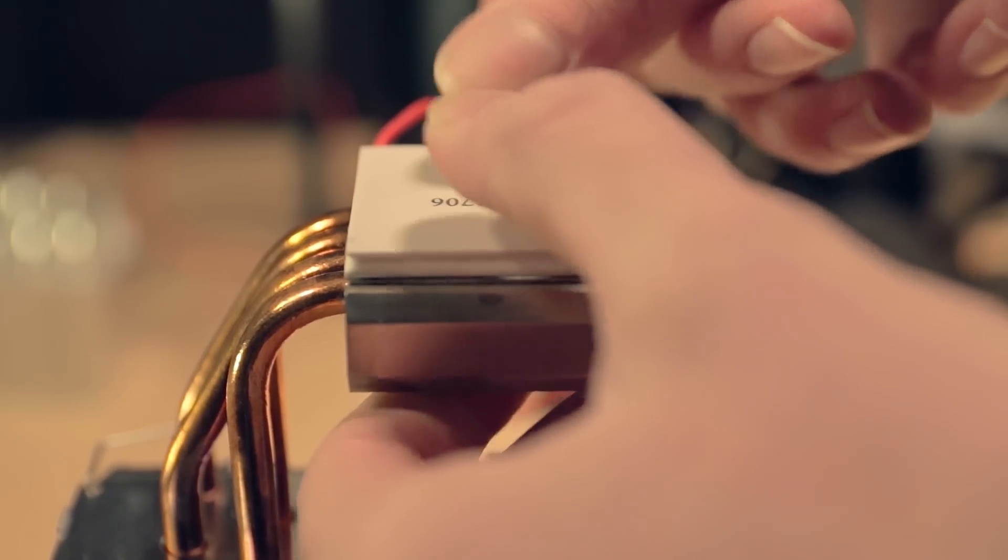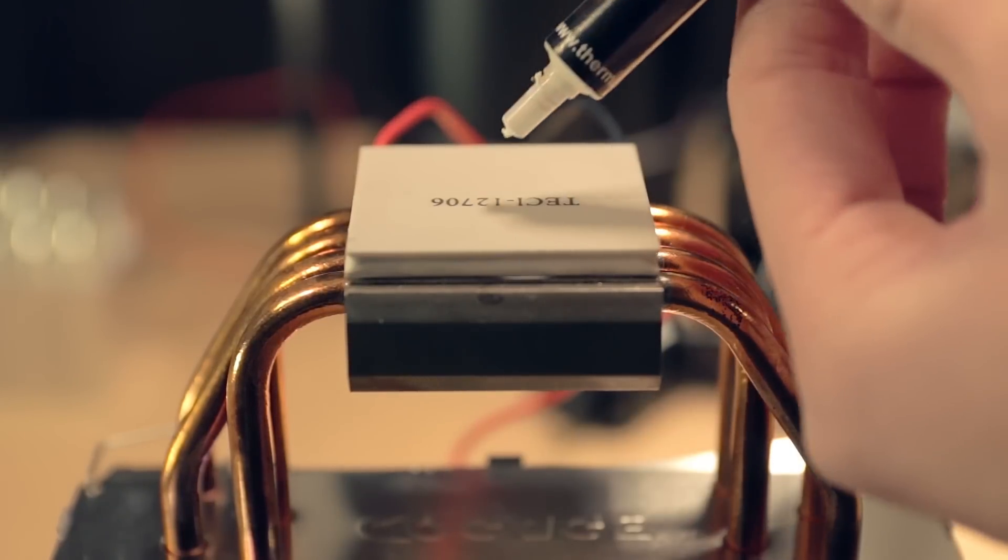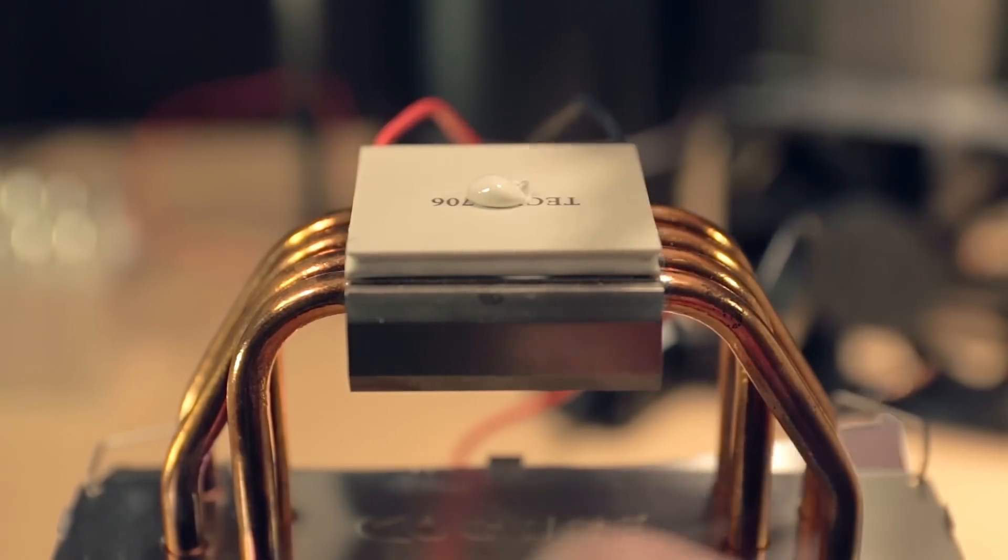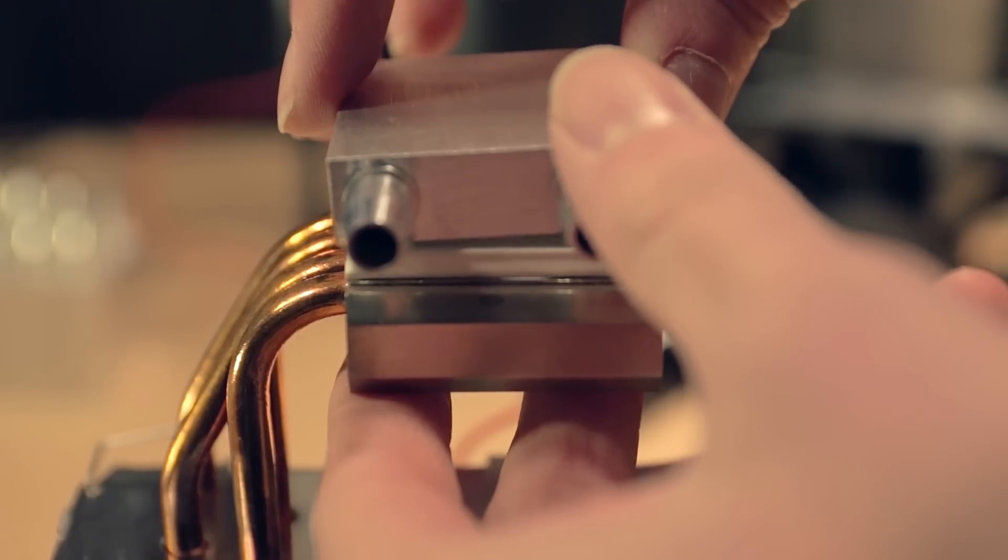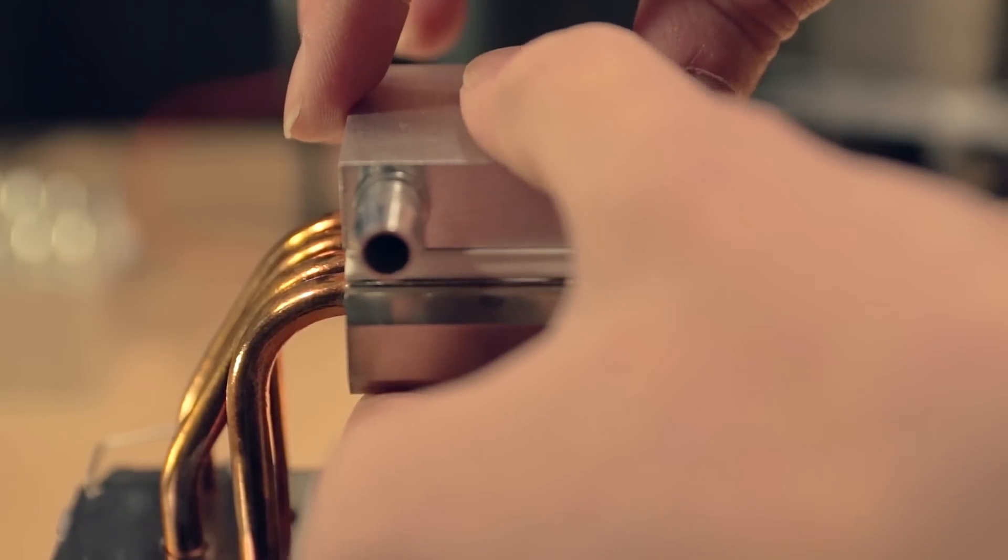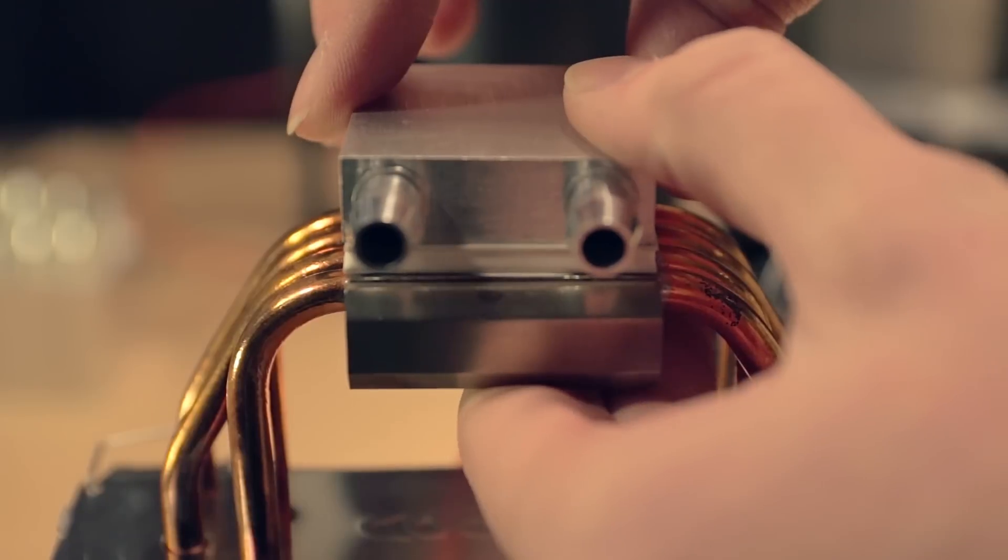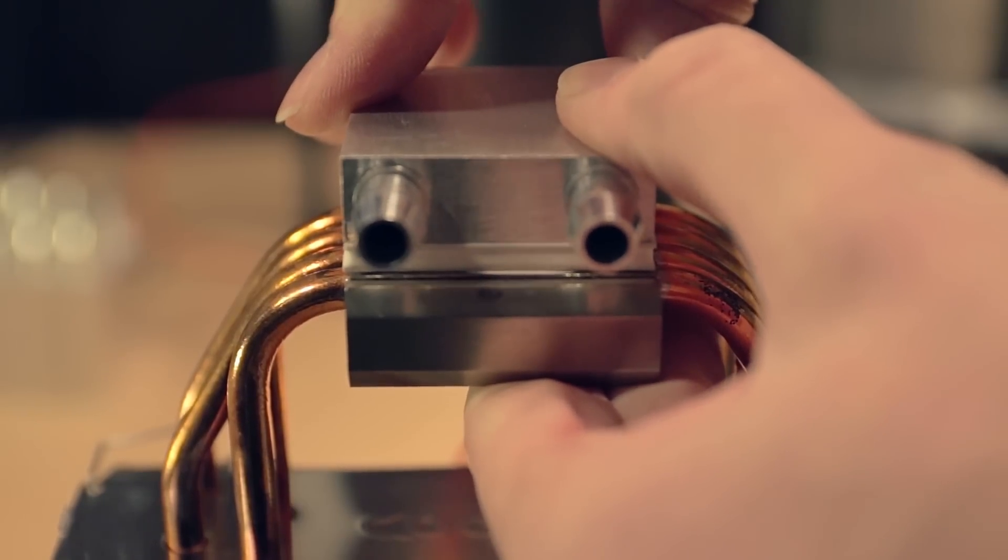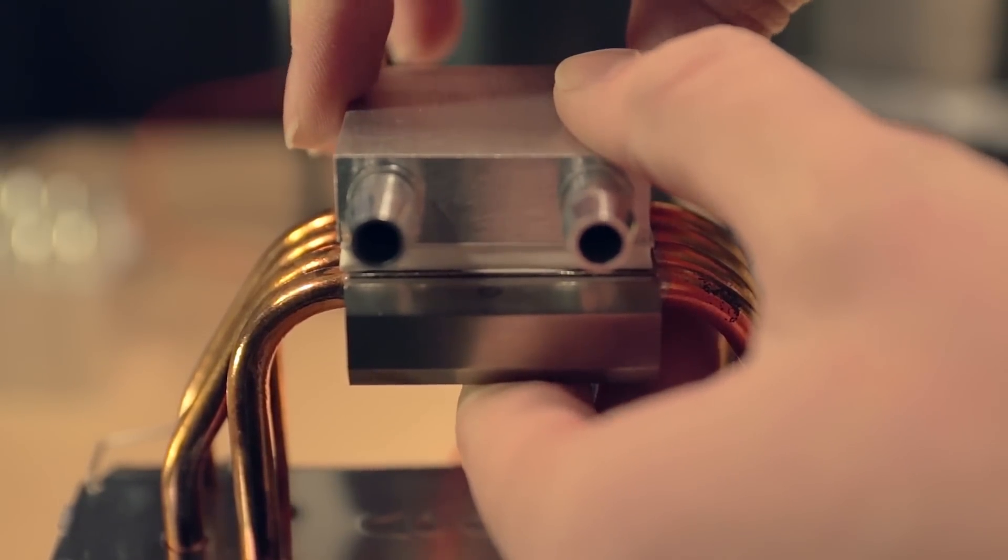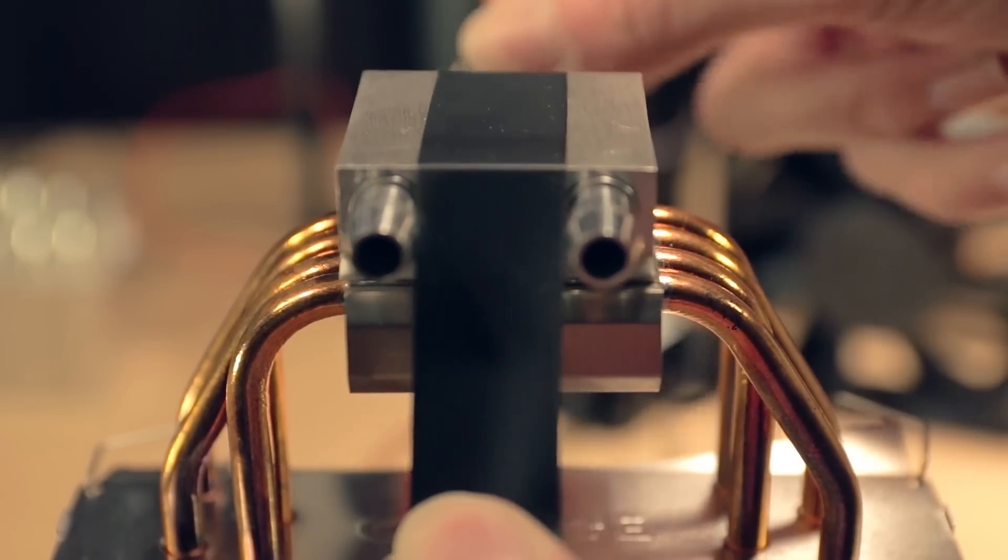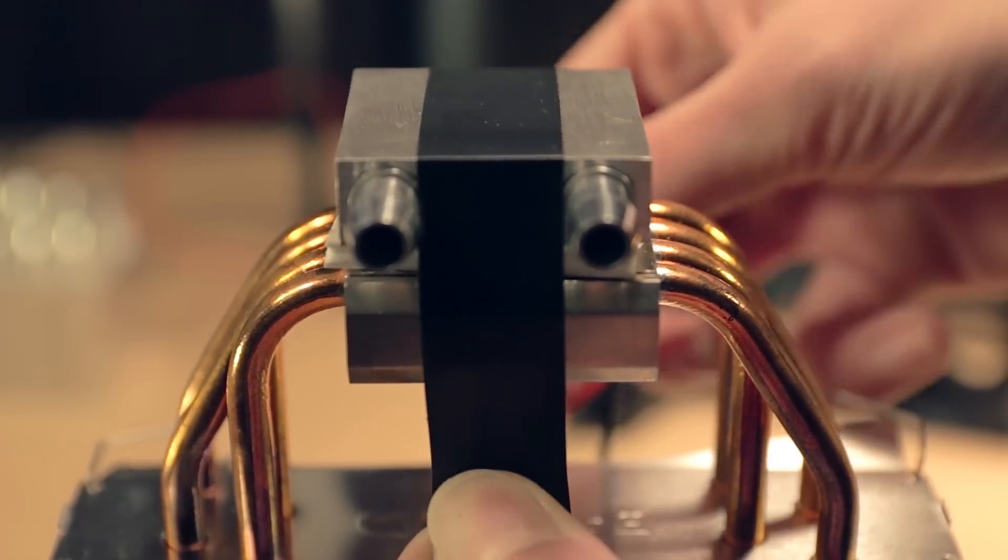On the top side of the Peltier chip, the cold side, I put another dot of thermal grease. Then I took a strip of electrical tape and wrapped it around all the parts to hold everything in place.